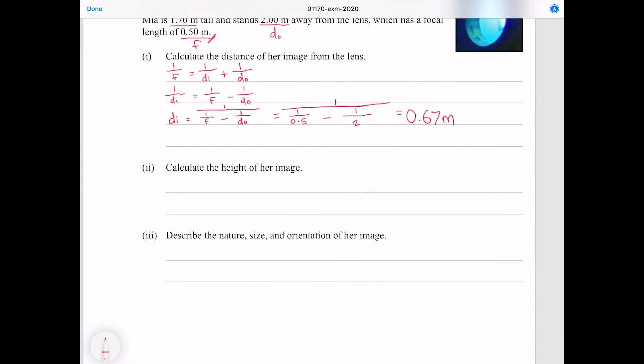Next question: Calculate the height of her image. Now for this we can use the equation on your formula sheet that is that di over do is equal to hi over ho. We just found out di, we're given do, we know ho is 1.7 up here, so we just need to solve this for hi. We can do so by multiplying both sides by ho and I'm also going to swap the sides around. Putting our numbers in, which gives me 0.5695, rounding that to two significant figures gives me 0.57 meters.